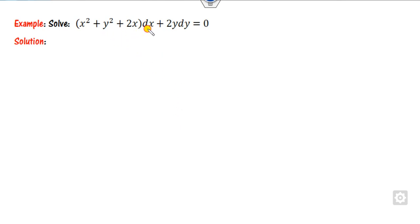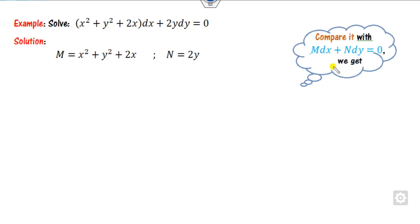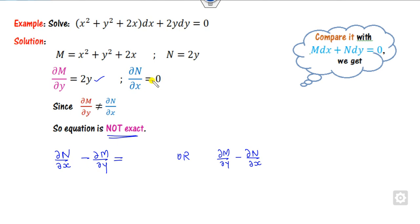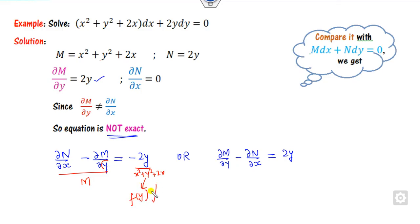Now we explain through seven examples. For the first example, which is a first-order differential equation, you compare it with M dx plus N dy to get M and N. Check whether this is exact — you can verify that it is not exact. Once it is not exact, you subtract them either way. If I subtract here, the answer is 0 minus 2y, which is minus 2y. If I divide by M, I check whether this is a function of y only — but it also contains x, so this is not valid.